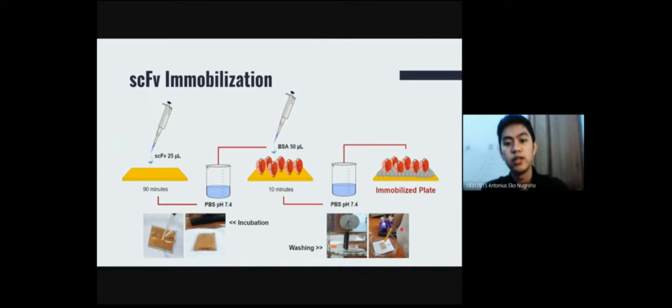And after that, we drop about 50 microliters of BSA or Bovine Serum Albumin and let it rest for about 10 minutes. And we wash it again and dry it using the same methods for creating the immobilized blade as shown in this slide.